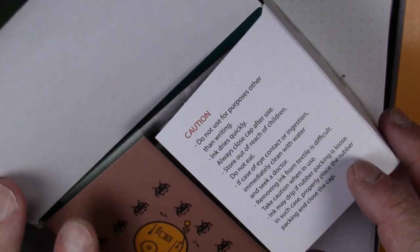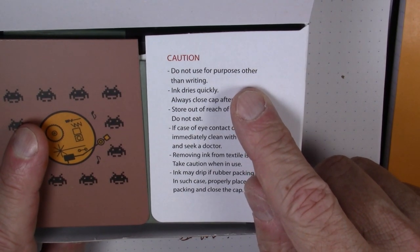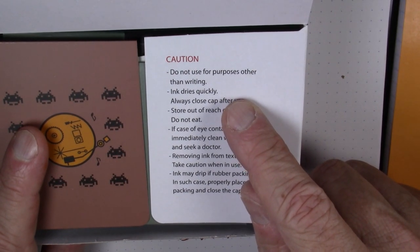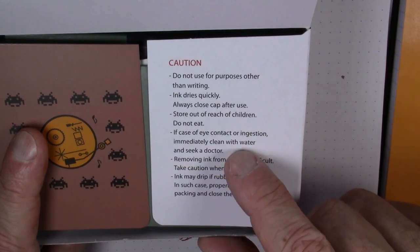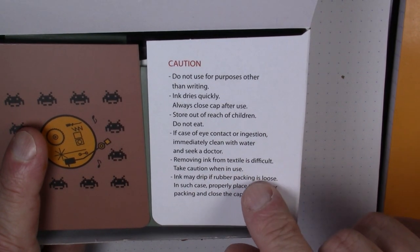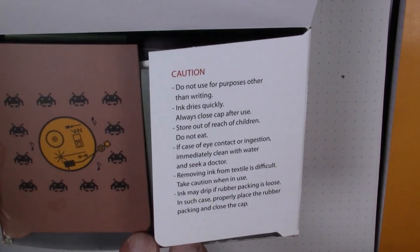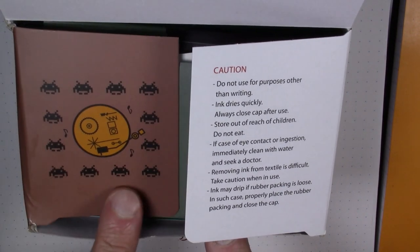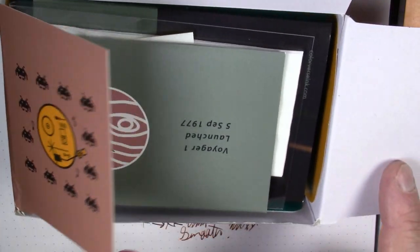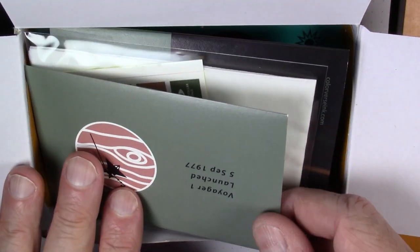It does give you a couple of interesting warnings: Do not use for purposes other than writing, ink dries quickly, always cap after use, do not eat, keep out of reach of children, removing from textile is difficult, et cetera. So they're basically caveating away any responsibility. It's got some interesting little graphics here as well. You open up the flap and you get a bunch of other stuff in here besides the ink.